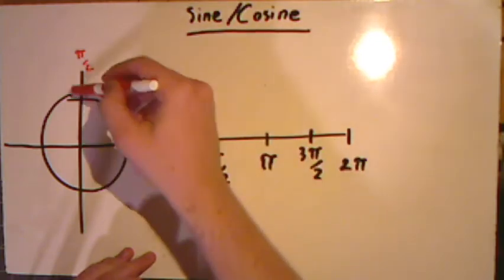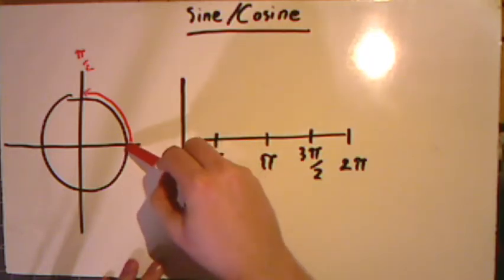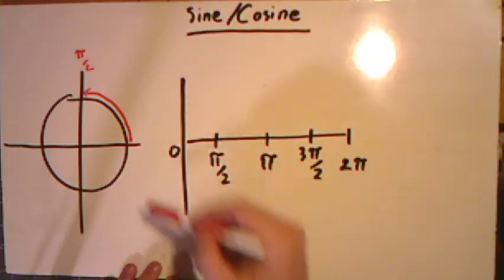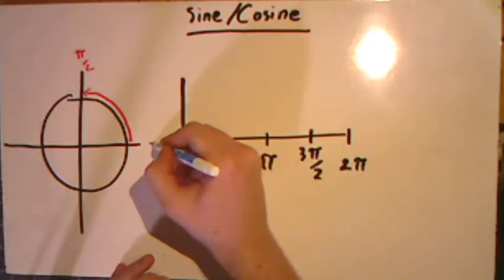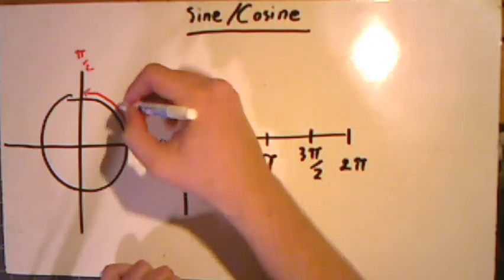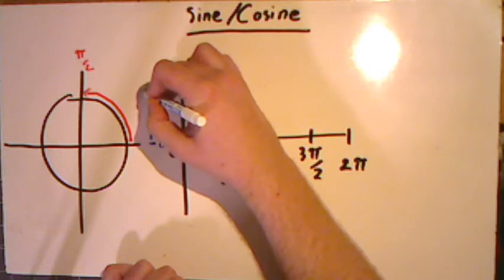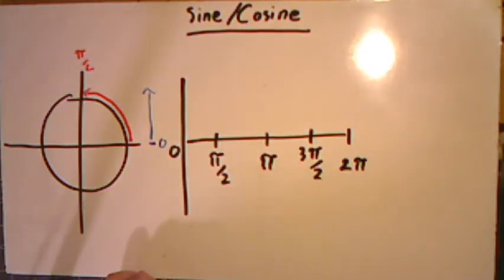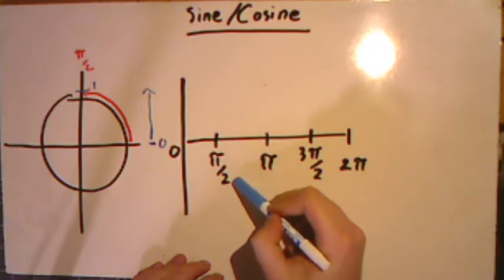Pi over 2 is our first mark. Let's take a look at what happens with sine as we start. At the very beginning, sine is 0. Remember, sine is our y value. So right here, sine is set as 0. As we go up, our sine value also increments up with our y, eventually matching up to get to 1. At pi over 2, we get to 1.